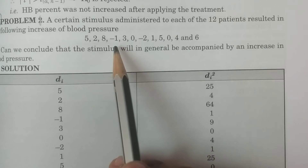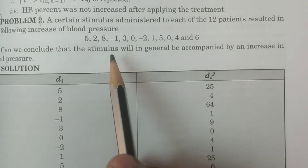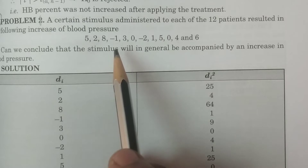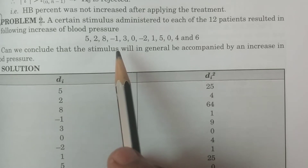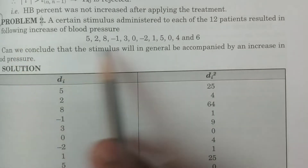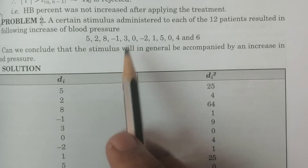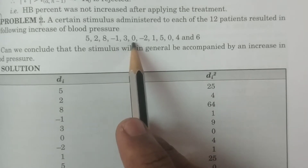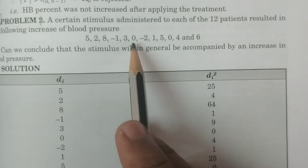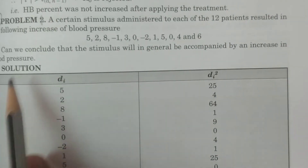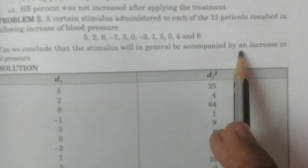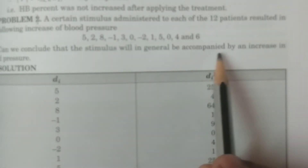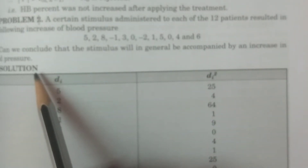You see minus 1, which means the previous reading was 100 and after that it is 99, so the increase is minus 1. If before and after the treatment it is 100 again, then it is 0. Can we conclude that the stimulus will in general be accompanied by an increase in blood pressure? That is what we have to test.